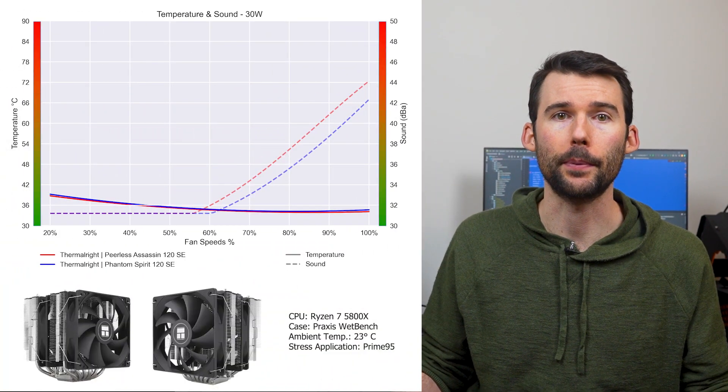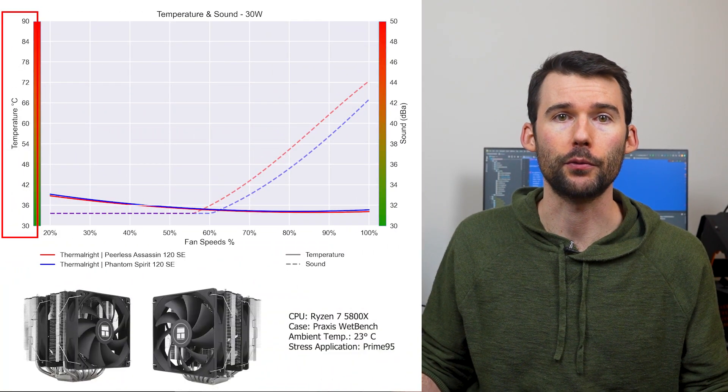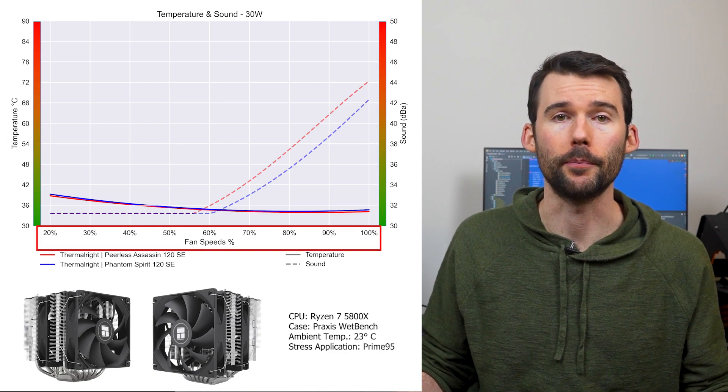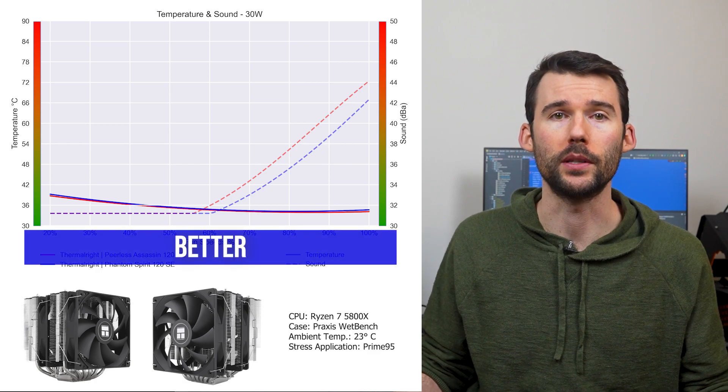In our first set of charts normalized by percent speeds, we have temperatures on the left represented by the solid line, noise on the right represented by the dash line, and percent speeds on the bottom. For this chart, lower is always better.